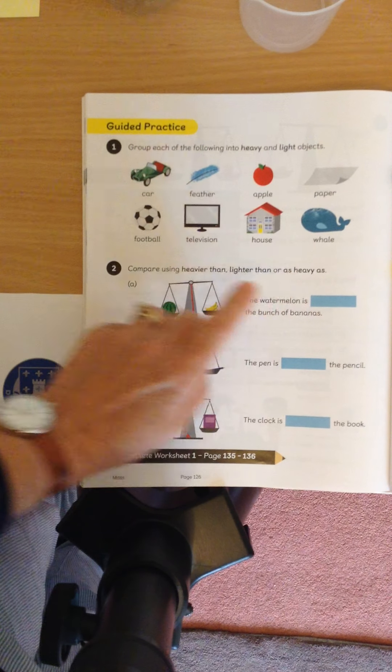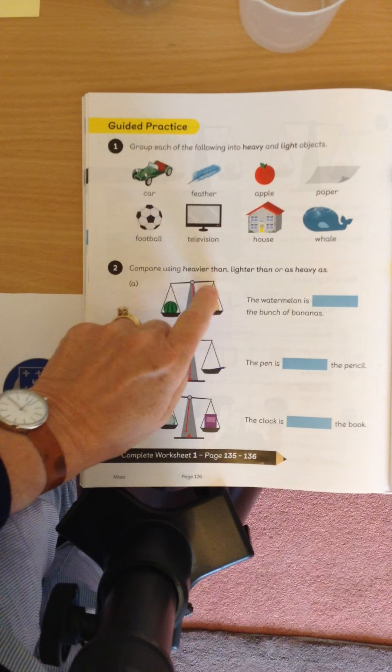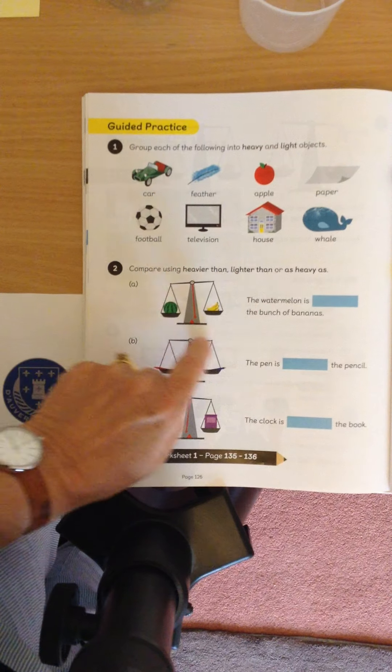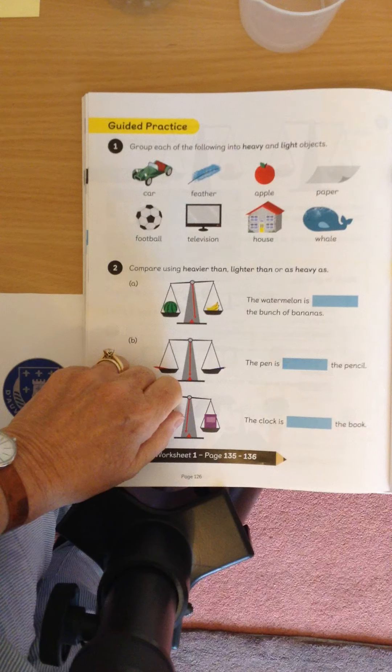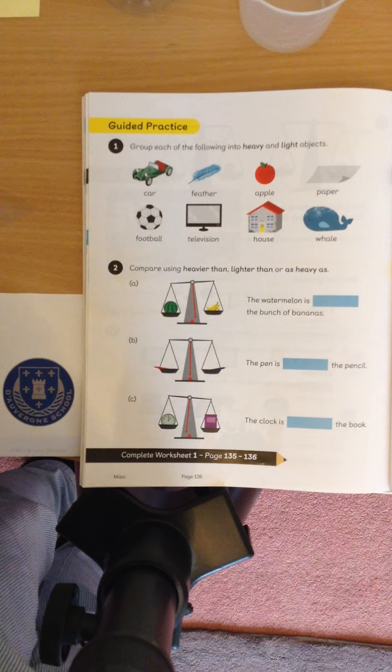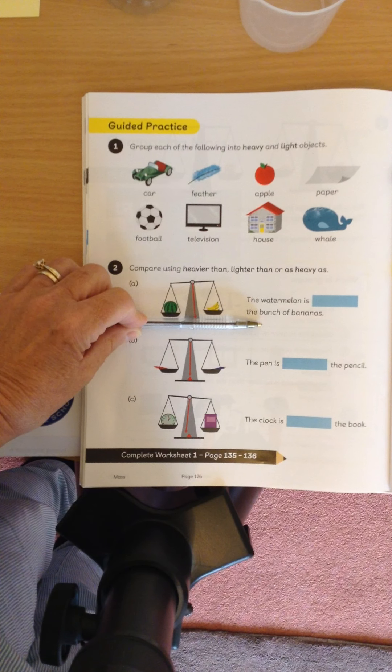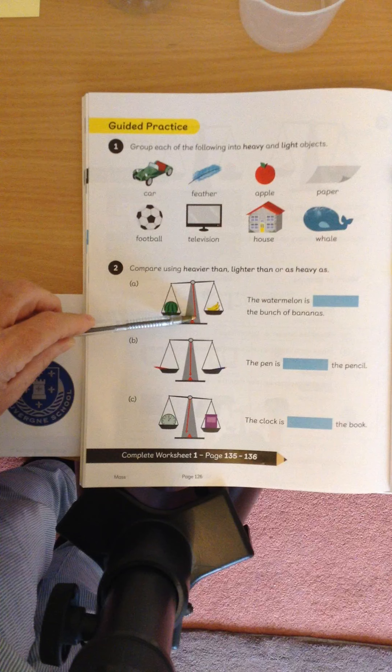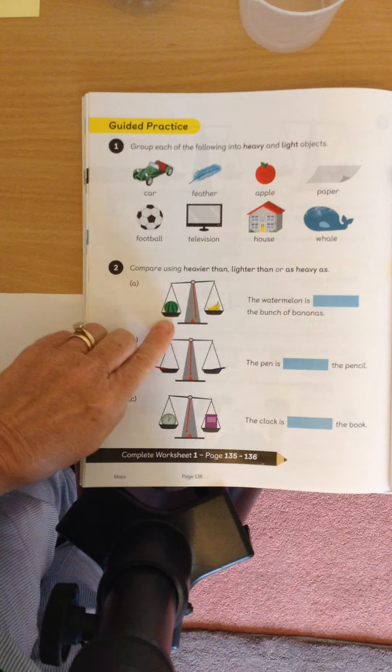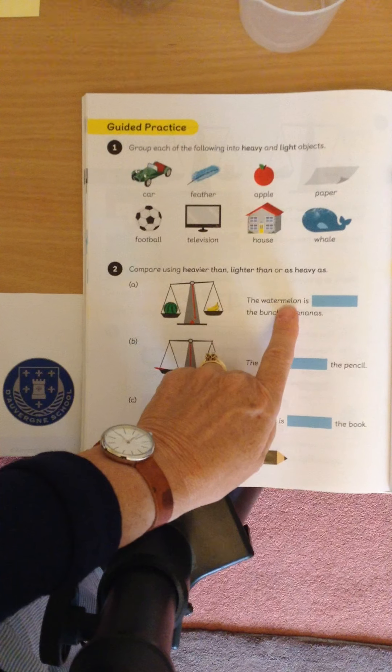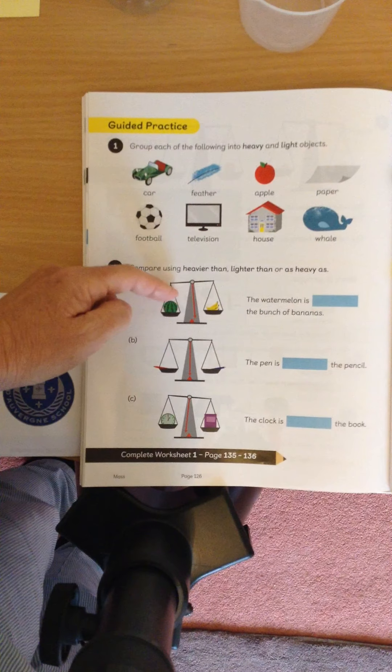So let's have a look. In here we've got a watermelon and we've got a bunch of bananas in the pan scales. Which pan is showing heavier? Which one is lower? Do you remember when we had a ruler or a pen or something straight? Which is further down? That's right, and we can see this red line. That's not pointing. So this one is lower. So this is heavier. So we can say the watermelon is heavier than the bunch of bananas you can see from the picture.